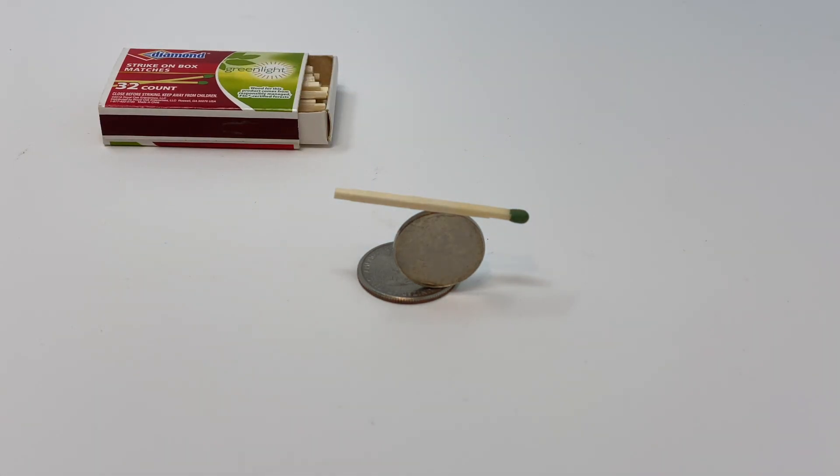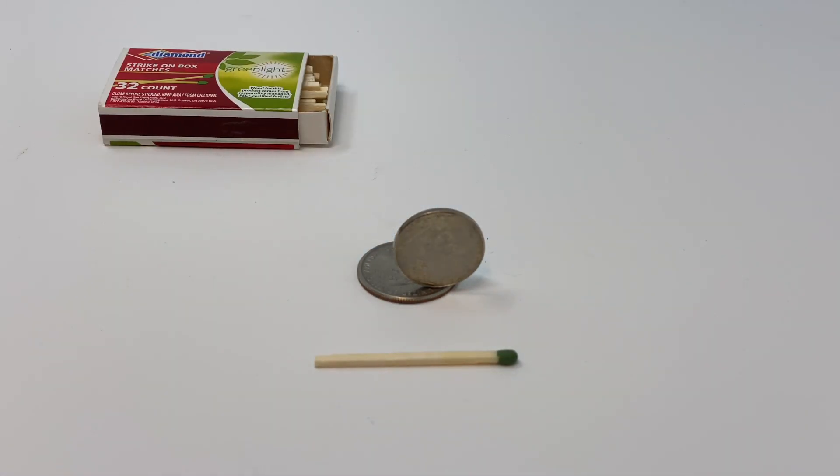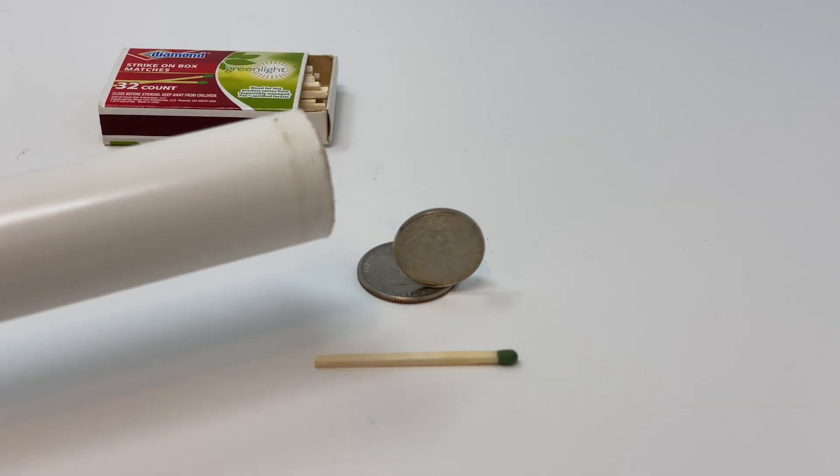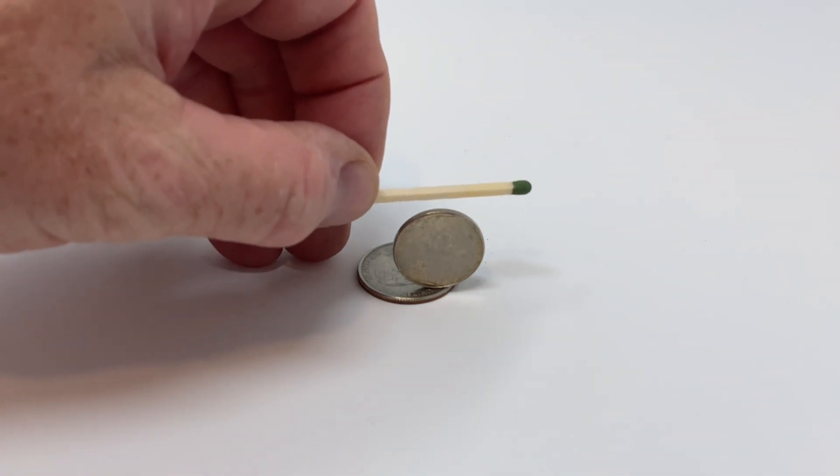Now I'm going to pull the plastic tube away and I'm going to charge that with an electrical charge. Now I'm not going to show you in this video how I do that. It's super simple. You're going to be surprised. Hey, look at that. I didn't have to touch the matchstick with the plastic tube. And the plastic tube knocked the matchstick right off the nickel.